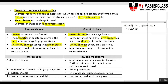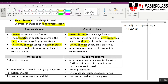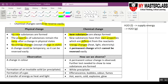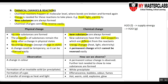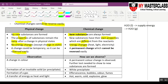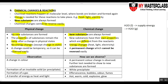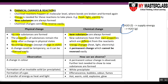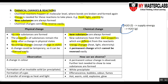A physical change can be temporary and reversed easily. For example, water vapor can be condensed back into liquid — that is a change in state, and it is easily reversed. But for chemical change, the change is usually permanent and cannot be reversed easily.